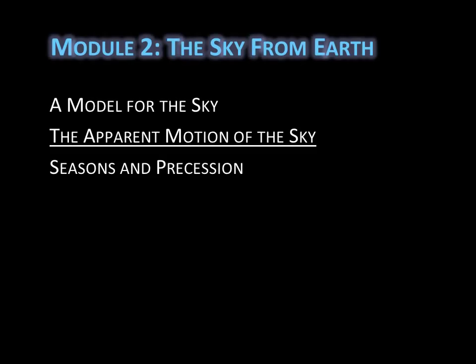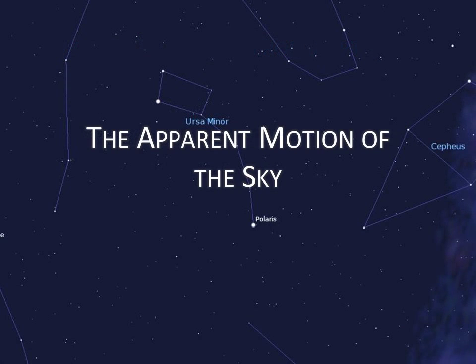In this lecture, we'll talk about the apparent motion of the sky. We're going to learn why the stars appear to rise and set, why the sky looks different from different locations on Earth, and how the sky varies over the course of a year.